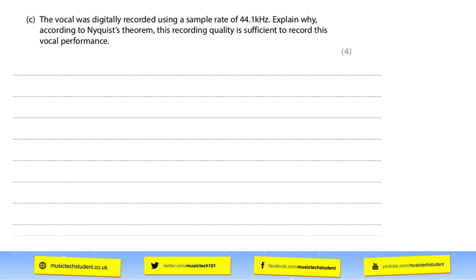For question C it's a theory question and you need to know about Nyquist theory. It says: the vocal is digitally recorded using a sample rate of 44.1 kilohertz — explain why, according to Nyquist theorem, that recording quality is sufficient to record this vocal performance. It's worth four marks. You could say that 44.1 kilohertz covers a range similar to the human ear — that would get you two marks — and then explain something further. You will need to do a bit of research on these particular elements.